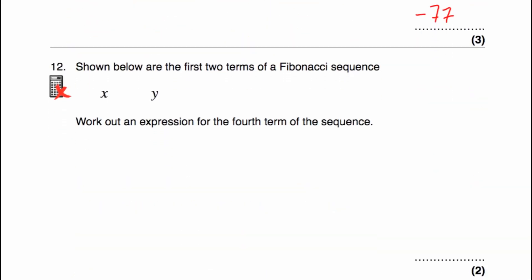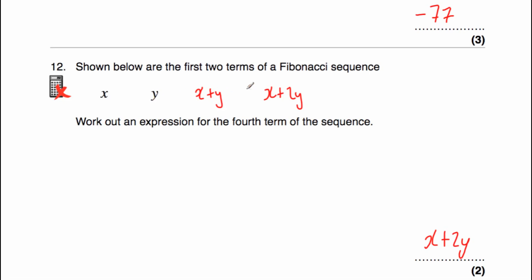Question number 12 says shown below are the first two terms of a Fibonacci sequence. We've got X and Y, and we've been asked to work out an expression for the fourth term. So X plus Y will be our third term. And to get our fourth term, we need to add the second term and the third term together. If we've got an X and we add a Y and another Y, that'll be X plus 2Y. So our answer would be X plus 2Y.